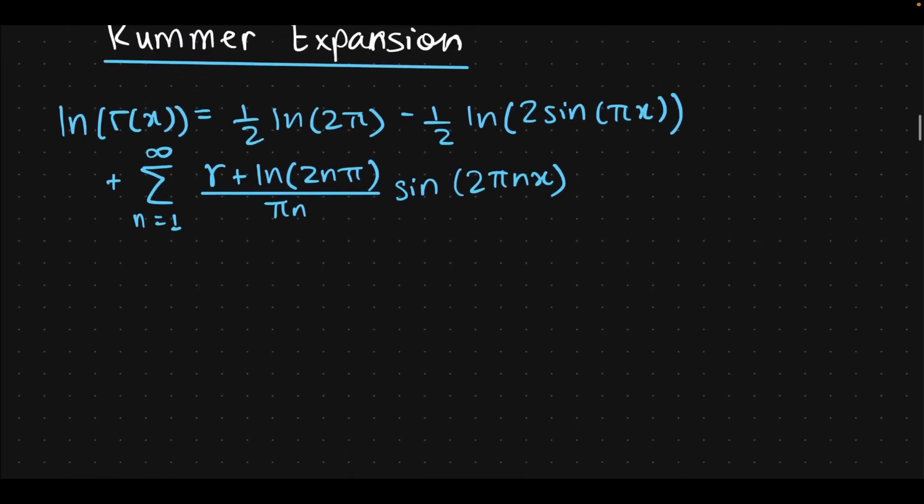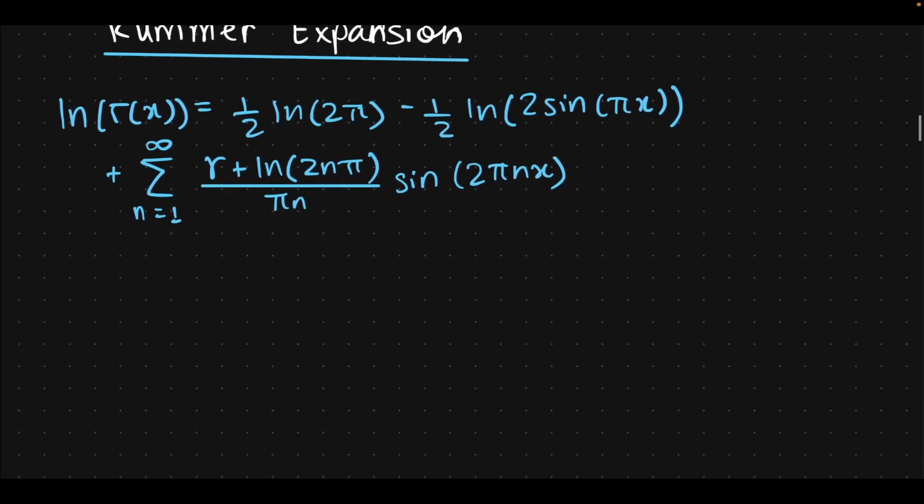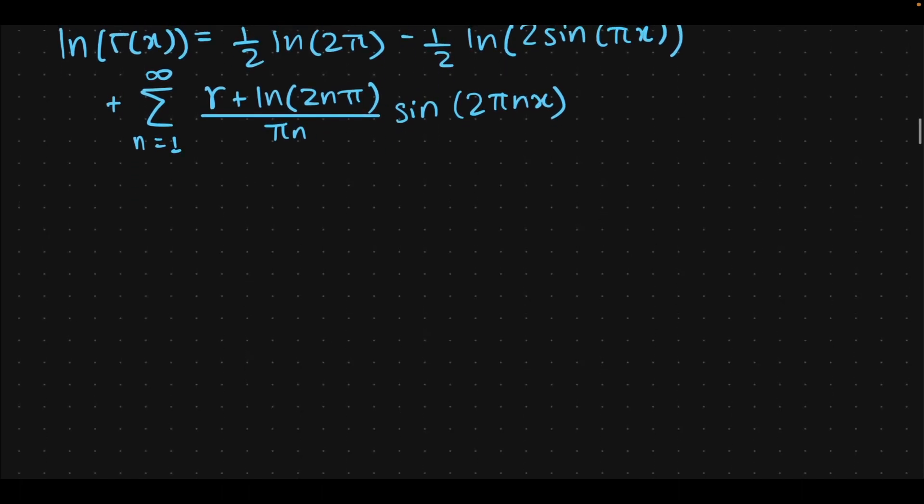Now for this development that we're going to make, we're going to sort of isolate one term in this expansion, namely the natural log term and the sine term. So sum from 1 to infinity, natural log of n over πn. What I'm deciding to do is I'm going to break this in the 2π part and the n part using multiplicative properties of the natural log.